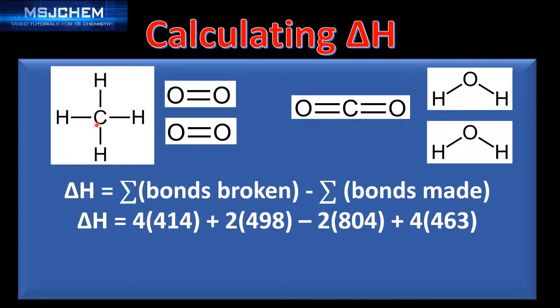In one mole of methane there are four moles of carbon to hydrogen bonds and each mole of carbon to hydrogen bonds requires 414 kilojoules of energy to break so I've multiplied that value by 4. The energy required to break one mole of oxygen to oxygen double bonds is 498 kilojoules but we have two moles of oxygen so we multiply the value by 2.